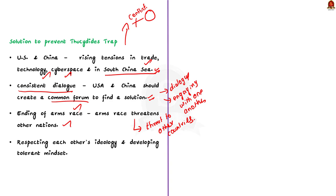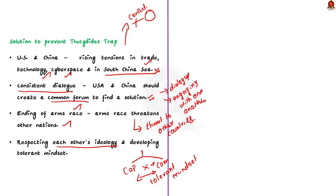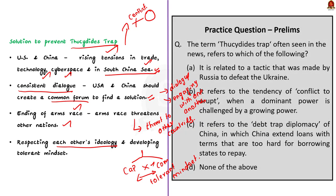Apart from this, both China and the USA should respect each other's ideology. The USA is a capitalist country whereas China is a communist country, and both are different in their core ideas. Developing a tolerant mindset in both countries will de-escalate the situation. By following these three basic steps, both countries can prevent falling into the Thucydides Trap. With this, let us conclude this discussion and take up the next news article.